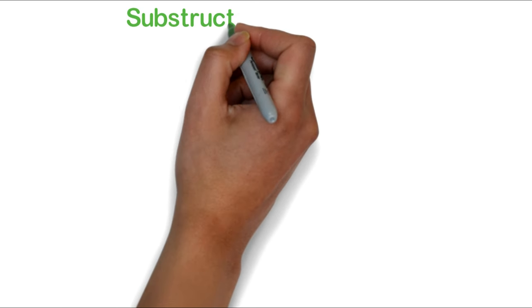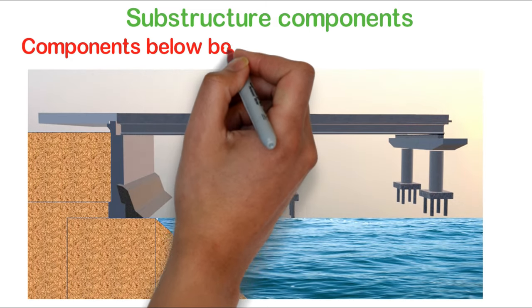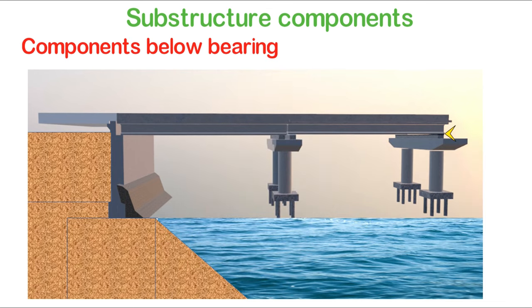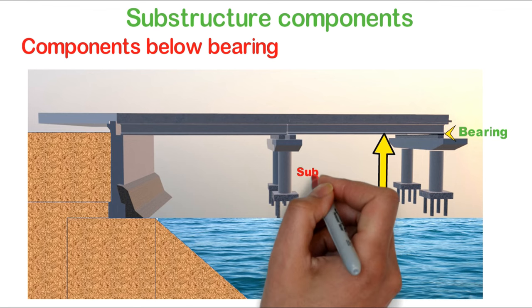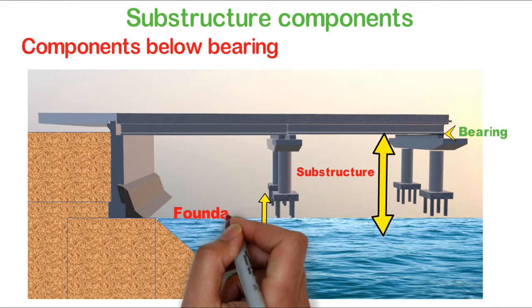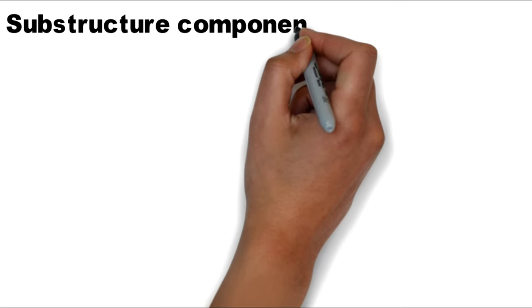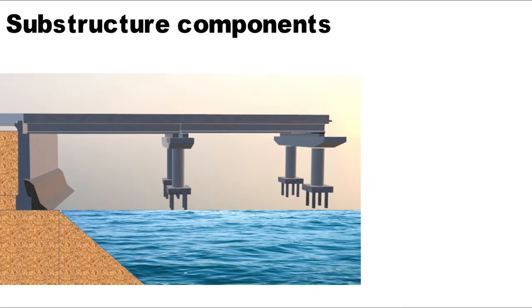First we will have a discussion about the substructure components. This is a typical cross-section of a bridge. The components below the bearing form the substructure. Foundation is also a part of the substructure component. The first substructure component is the abutment.